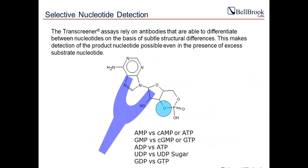Transcreener technology — the platform relies on highly specific antibodies that are able to differentiate between nucleotides on the basis of a single phosphate or even a small methyl group. Selectivities of the product nucleotides, for example ADP versus the substrates like ATP, range anywhere from 150-fold to 1,000-fold depending upon the nucleotide being tested. For example, the AMP antibody has 1,000-fold selectivity.